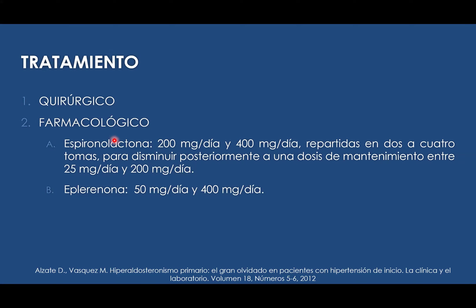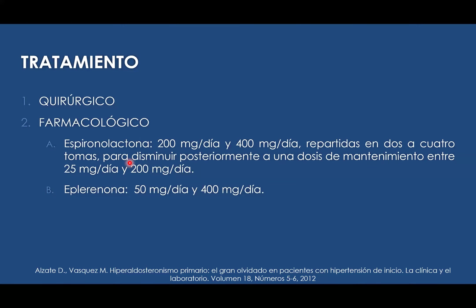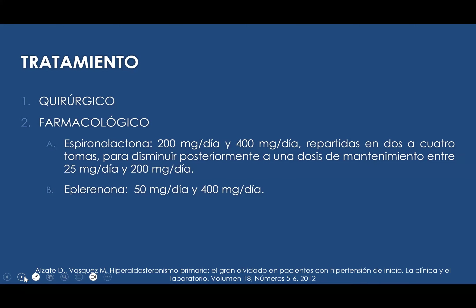La bibliografía indica que la dosis de espironolactona es de casi 200 miligramos por día, divididas de 2 a 4 tomas, luego ir disminuyendo de manera progresiva para una dosis de mantenimiento aproximada de entre 25 a 100, máximo 200 miligramos. Una alternativa que tenemos es la eplerenona, entre 50 y 400 miligramos por día aproximadamente.